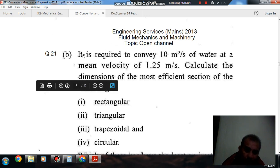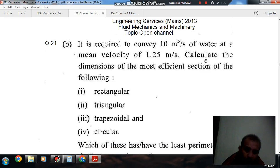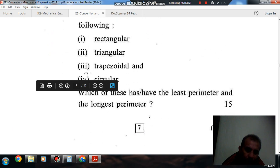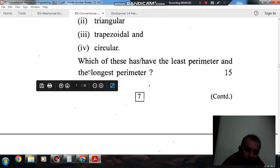It is required to convey 10 m³/s of water at mean velocity of 1.25 m/s. Calculate the dimensions of most efficient section of the following: rectangular, triangular, trapezoidal, and circular. Which of these has the least perimeter and the longest perimeter?